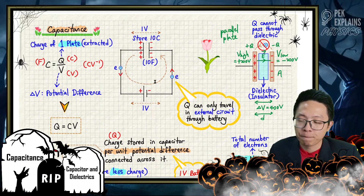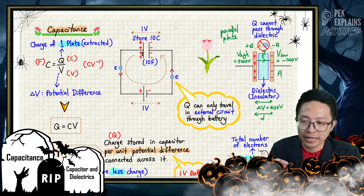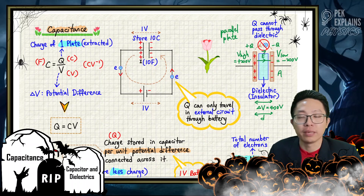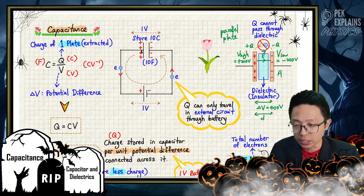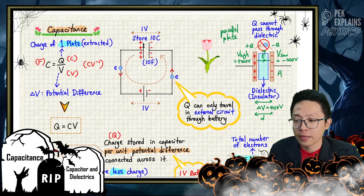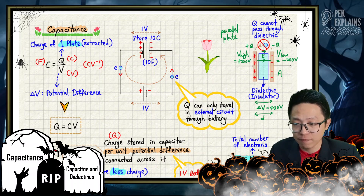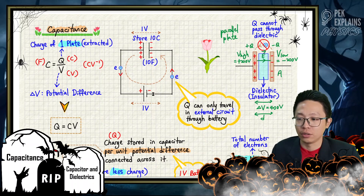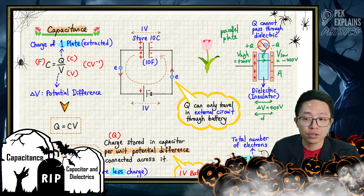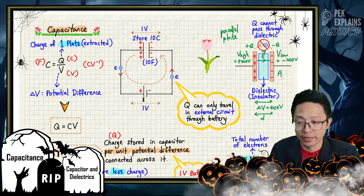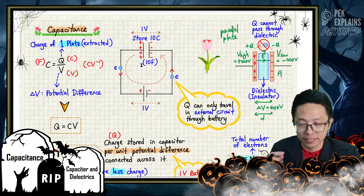Electrons from the left plate are attracted to the positive terminal of the battery due to electrostatic force. When electrons are extracted out from that plate, the plate becomes positive because it loses electrons. Now this plate has become the positive plate. The positive plate of the capacitor then starts to attract electrons from the negative terminal of the battery.